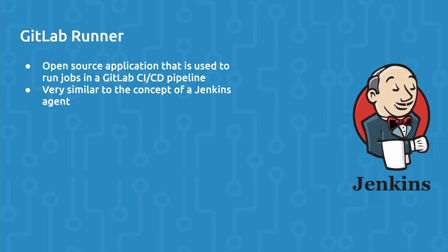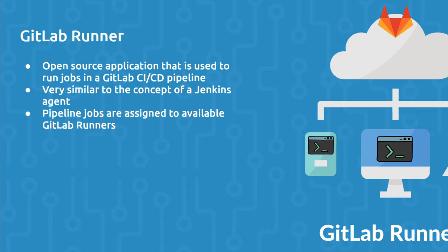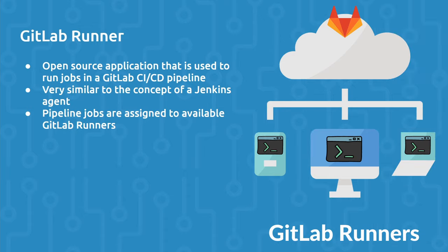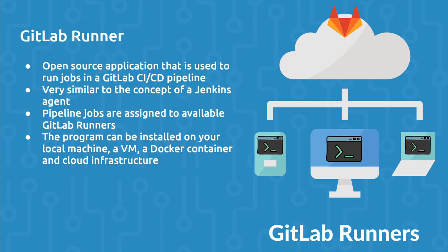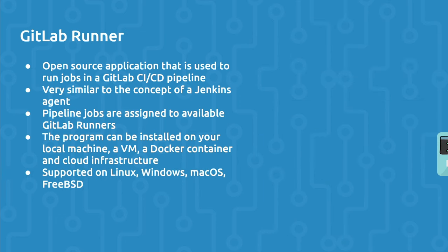When a GitLab pipeline is triggered, the jobs defined in the GitLab pipeline are assigned to available GitLab Runners. The GitLab Runner program can be installed on your local machine, a virtual machine, a Docker container, or cloud infrastructure. And it's supported on multiple operating systems.